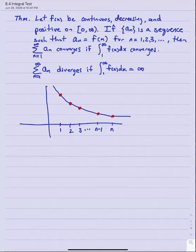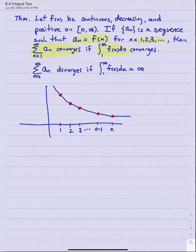Section 8.4, the integral test. The theorem states: suppose f is a continuous, decreasing, and positive-valued function on the interval zero to infinity. Then if we have a sequence a sub n that happens to match up with f at all integer values, the infinite series from n equals 1 to infinity of a sub n converges if the improper integral from 1 to infinity of that f function converges.